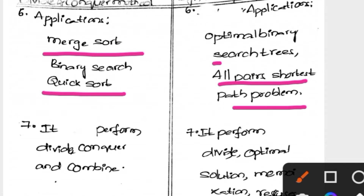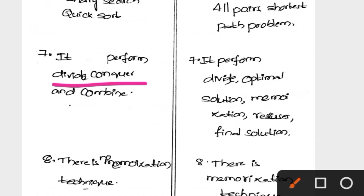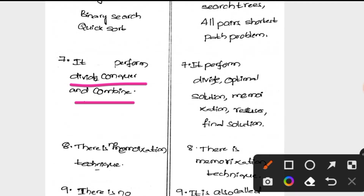In Divide and Conquer there are three steps: the first is Divide, the second is Conquer, and the third is Combine. In the Divide step we divide the big problem into small problems. In step two we find the feasible solution, and in step three we combine all the solutions together.